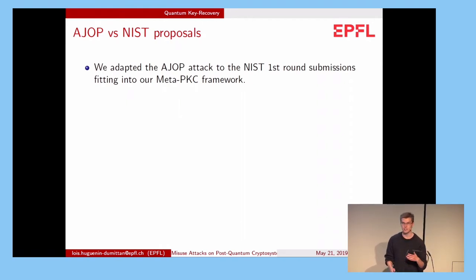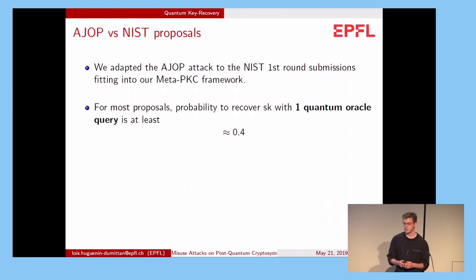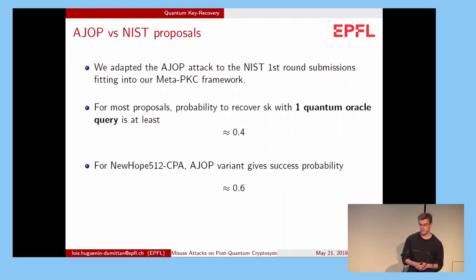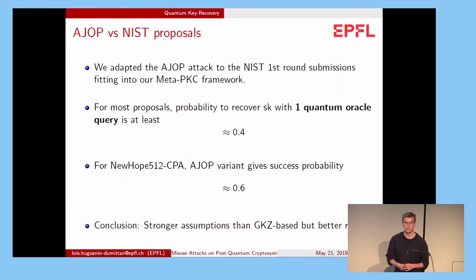I'm just giving the results here. For most proposals, the probability to recover the secret key with one quantum oracle query is at least 0.4. And we designed a variant of this algorithm for New Hope, and we get an even better probability of 0.6 to recover the secret key. So we see that the assumptions are stronger, but the results are better.